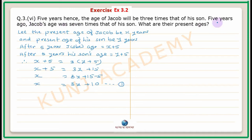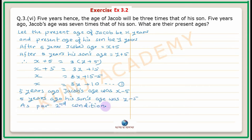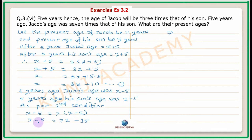As per the second condition, 5 years ago Jacob's age was 7 times that of his son. Jacob's age was x minus 5 and his son's age was y minus 5. Therefore, x minus 5 equals 7 into y minus 5, giving x equals 7y minus 35 plus 5.